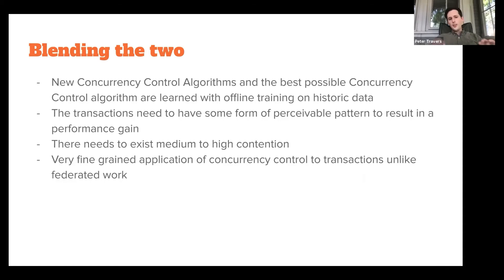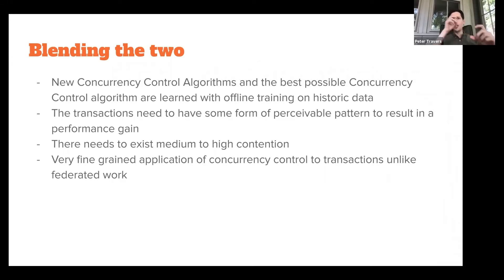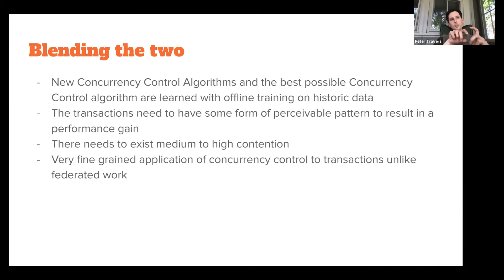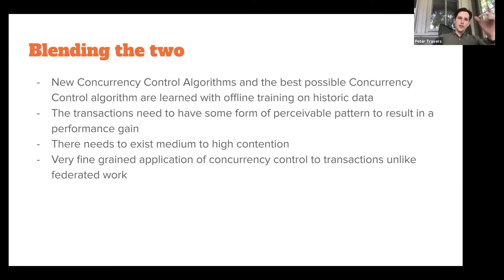Other work in this space has basically tried to find shards — essentially subsets — and then apply a specific algorithm to a subset, but it's not very fine-grained. It's coarse-grained: pick an area to apply a concurrency control algorithm to, but that area will contain sets of transactions that would have been better served with a different algorithm. What this work has done is learn a very fine-grained approach to handling concurrency control.